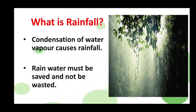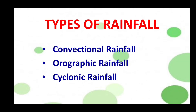Rainwater must be conserved through rainwater harvesting and should not be wasted. There are three types of rainfall: convectional rainfall, orographic rainfall, and cyclonic rainfall.